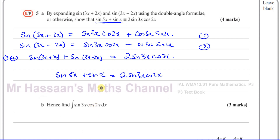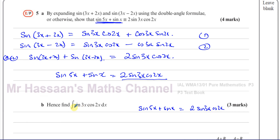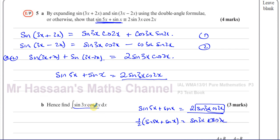Then it says: hence find the integral of sine(3x)cosine(2x). What we can do is note that sine(5x) + sine(x) = 2·sine(3x)cosine(2x), so sine(3x)cosine(2x) = ½[sine(5x) + sine(x)]. Therefore the integral of sine(3x)cosine(2x) dx equals one half times the integral of [sine(5x) + sine(x)] dx, taking the constant outside.